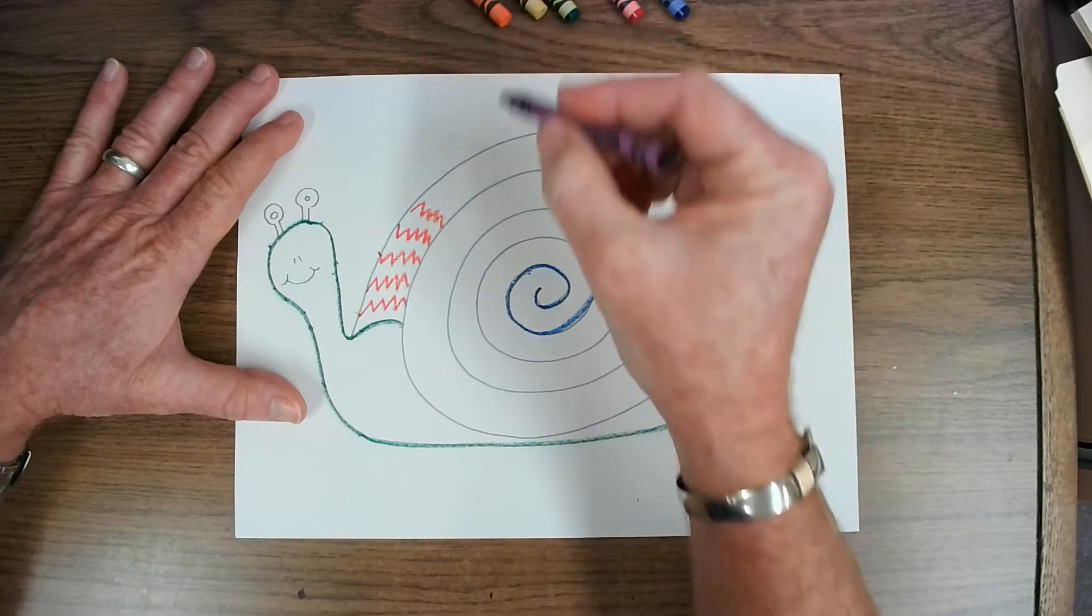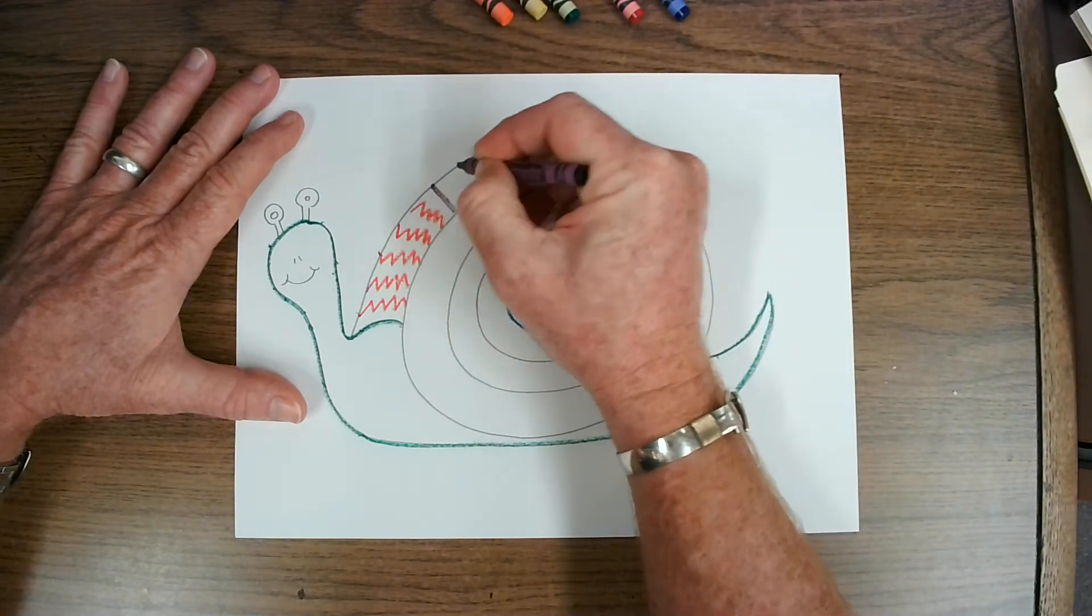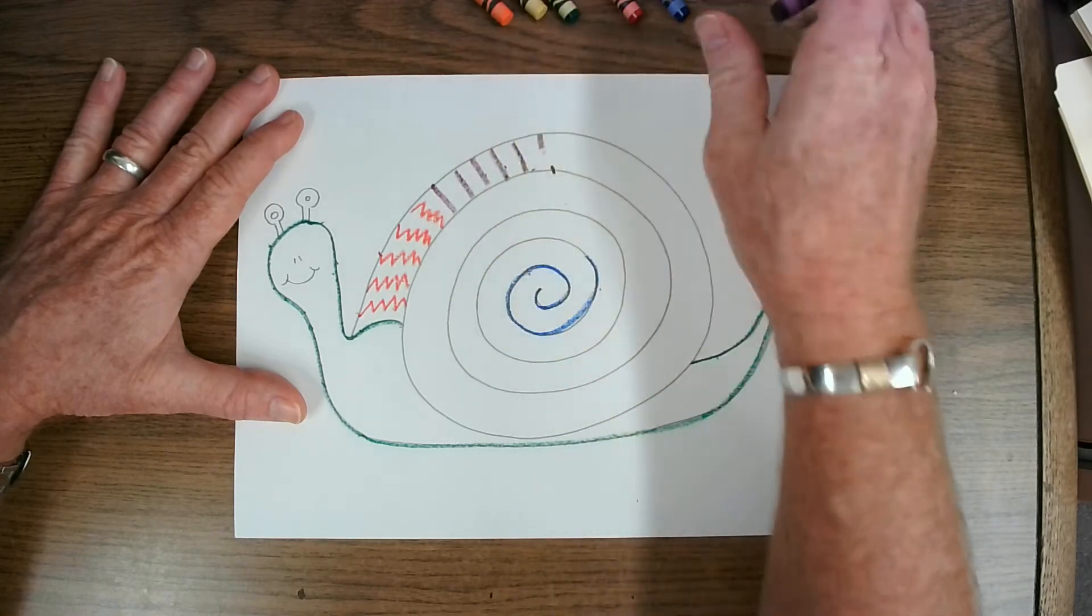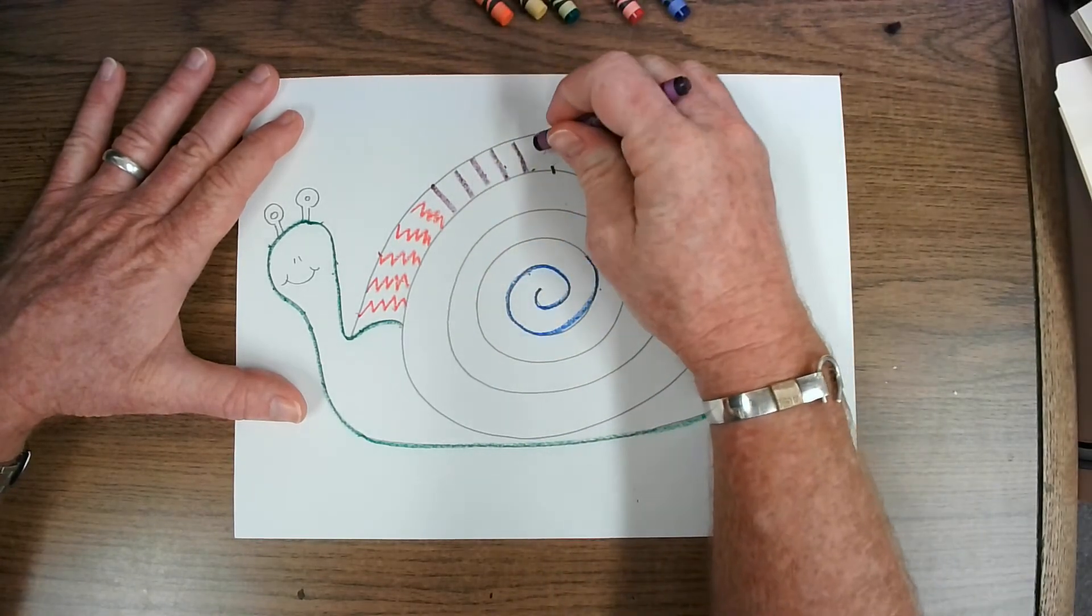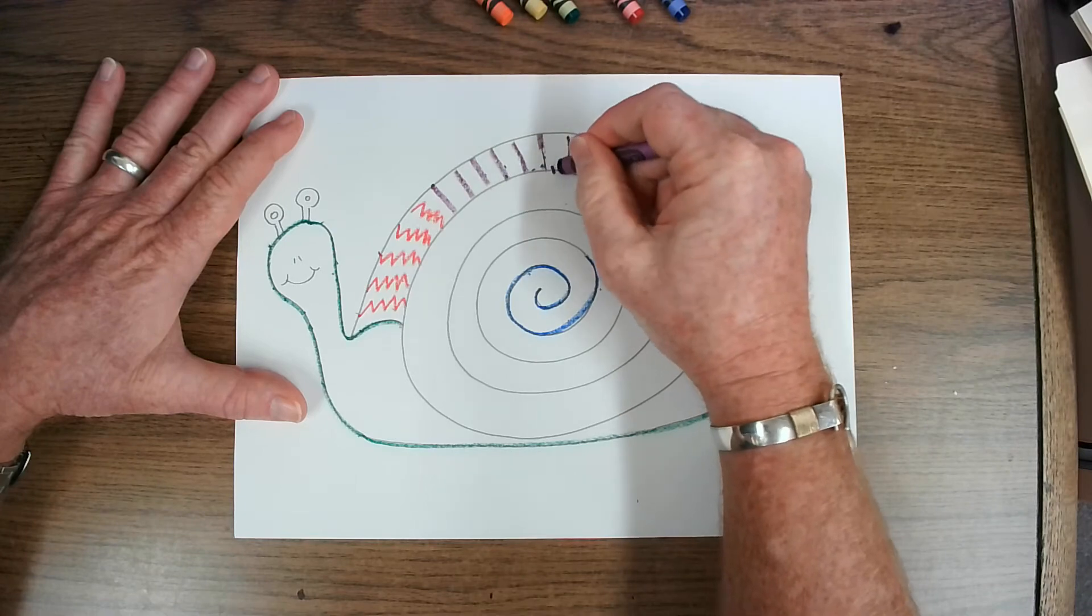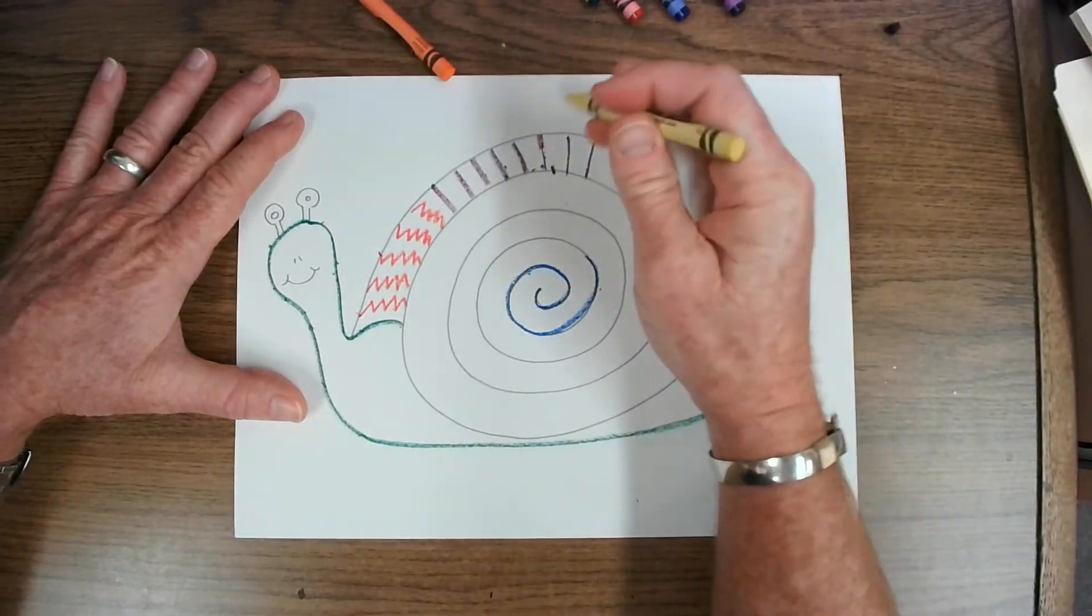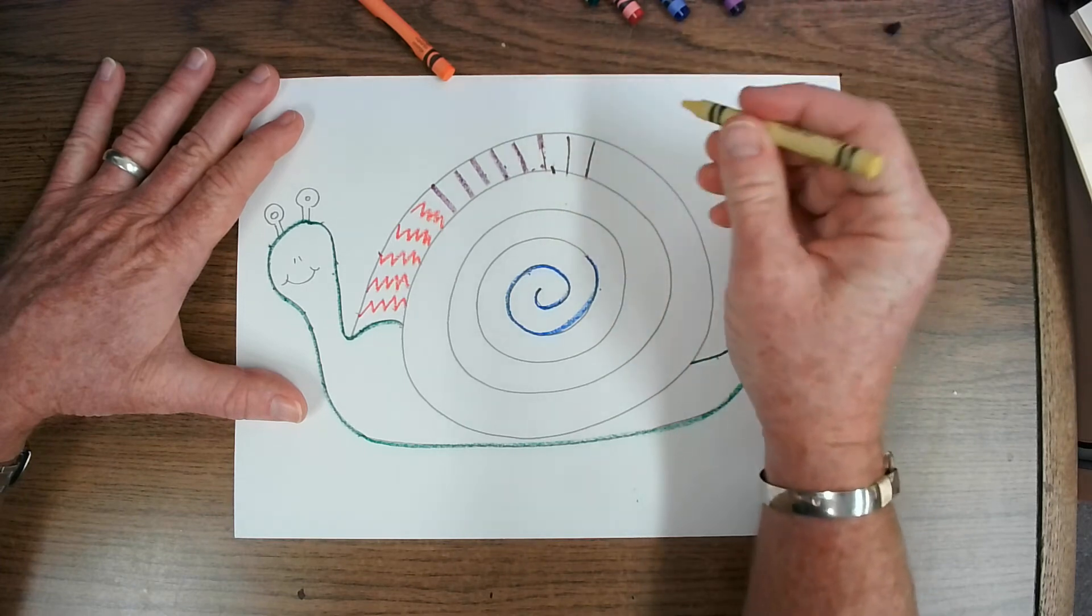And now I'd like to change colors and perhaps I'll put some straight lines in here. Whoops. I was pressing down a little bit too hard. So one thing about crayons, if you press down too hard, you're going to break the crayon. But we do need to press down hard so these colors are very bright.